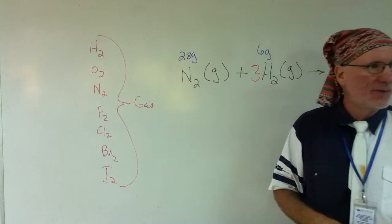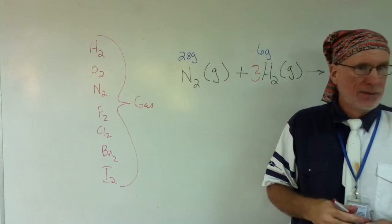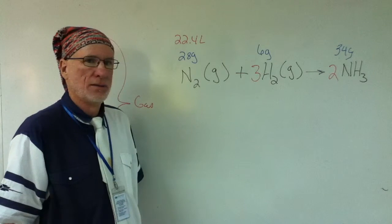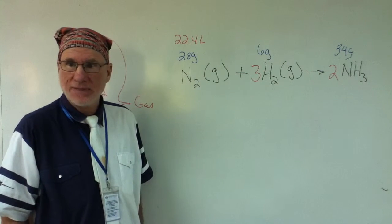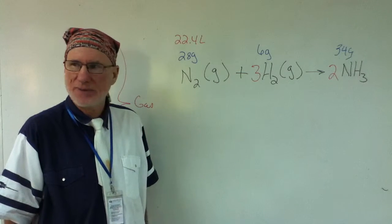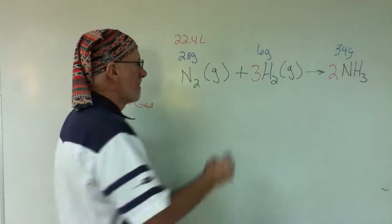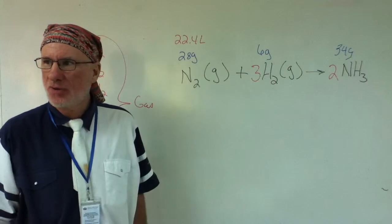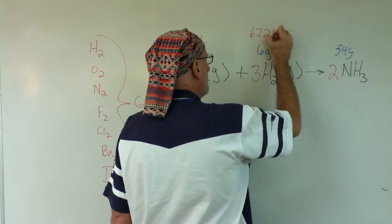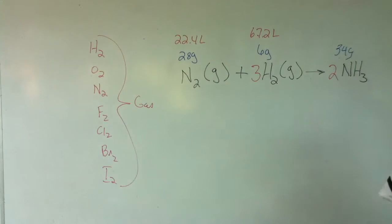What's the volume of one mole of nitrogen? This is all at STP, guys. 22.4 liters? Cubic decimeters, same thing. The IB uses cubic decimeters. I use liters. What's three times 22.4? 67.2. And what about two times 22.4? 44.8.